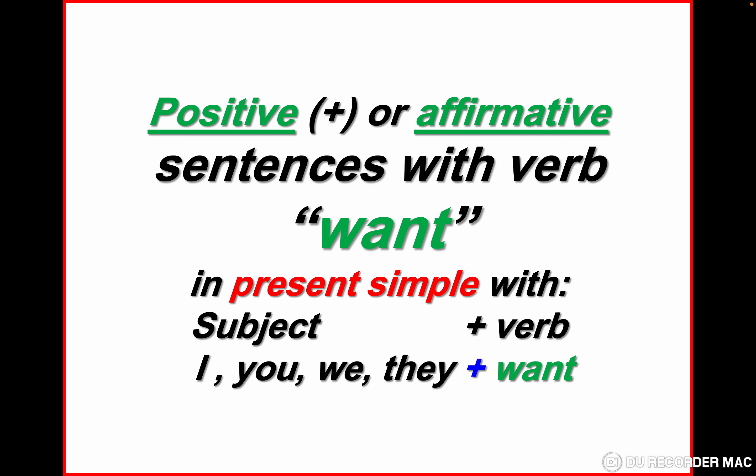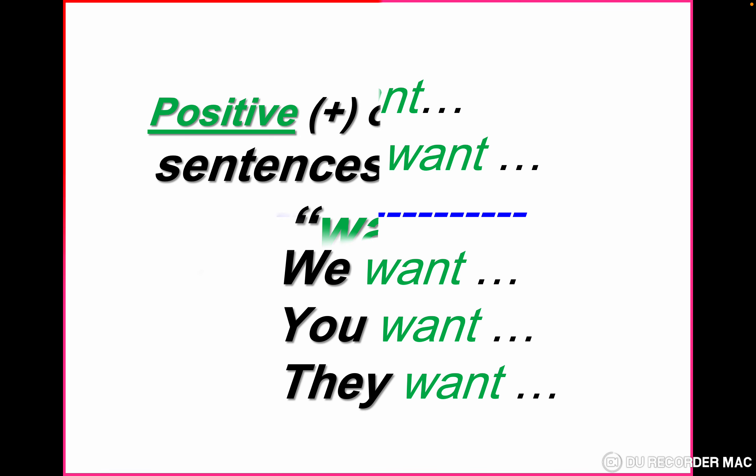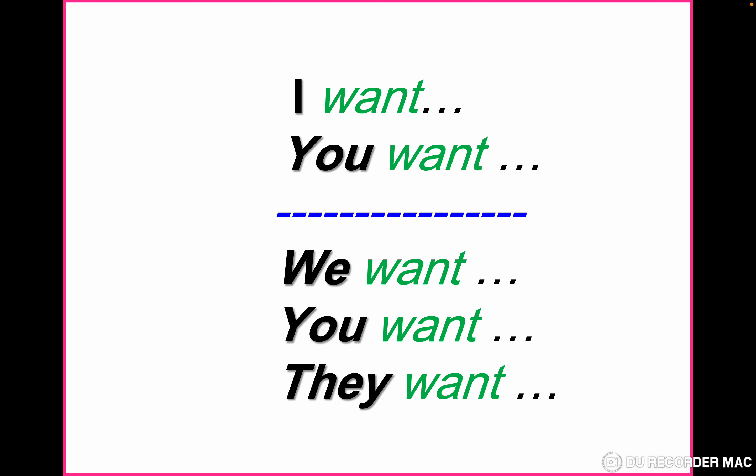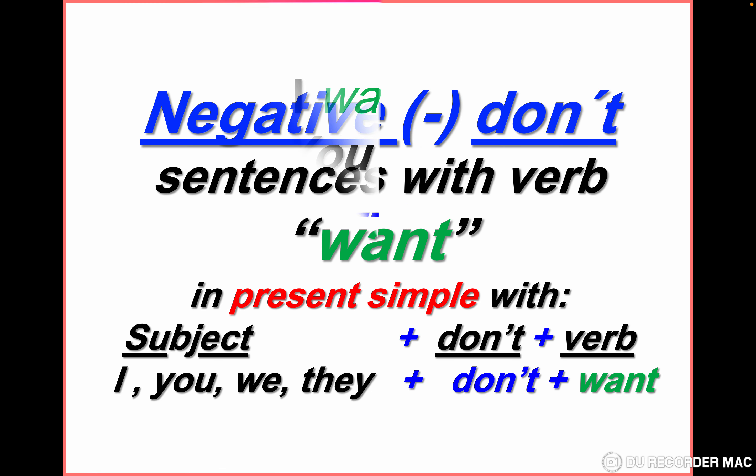Let's see the positive form of the verb 'want' in Present Simple. The rule is: subject plus verb. The subjects in this lesson are I, you, we, and they — plus 'want'. So we say: I want, you want, we want, you want, they want.